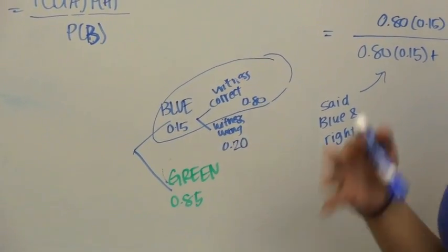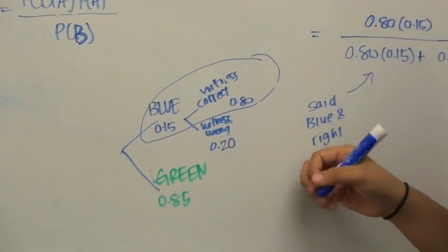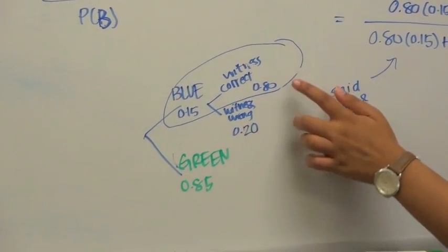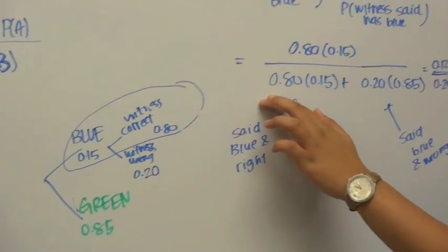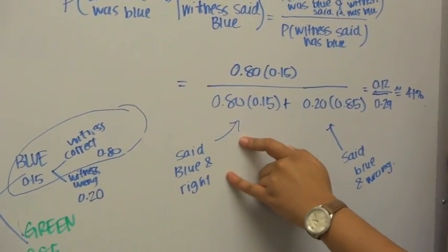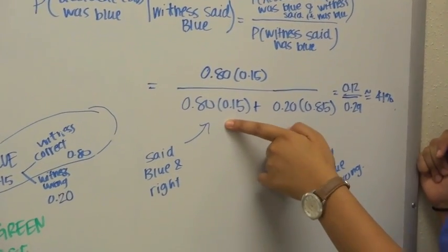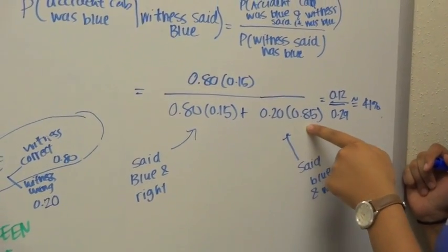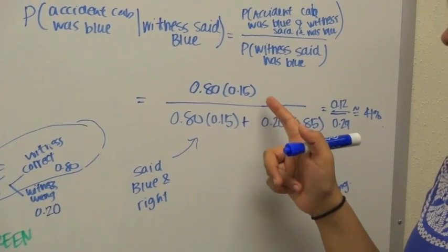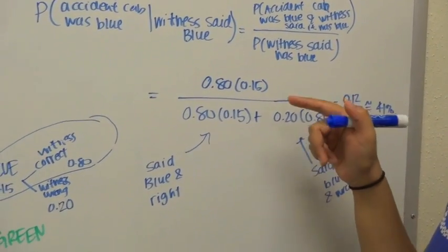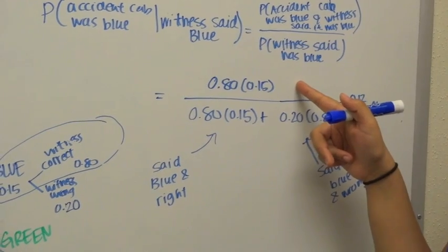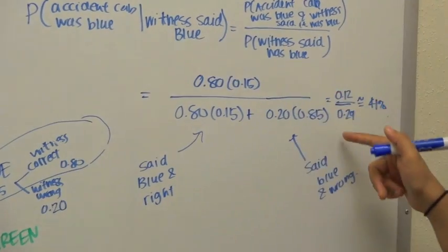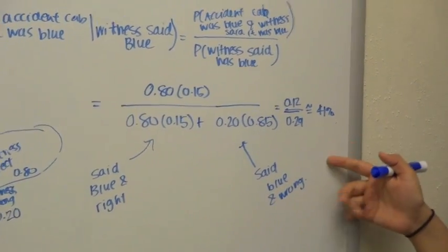The total probability uses 0.8 and 0.2 for correct and incorrect witnesses. The probability the witness said it was blue and was correct is 0.8 × 0.15. The probability the witness said it was blue and was wrong is 0.2 × 0.85. For the numerator, we need the probability the cab was blue and the witness said it was blue, which is 0.8 × 0.15 = 0.12. The final calculation is 0.12 over 0.29, which equals 41%.